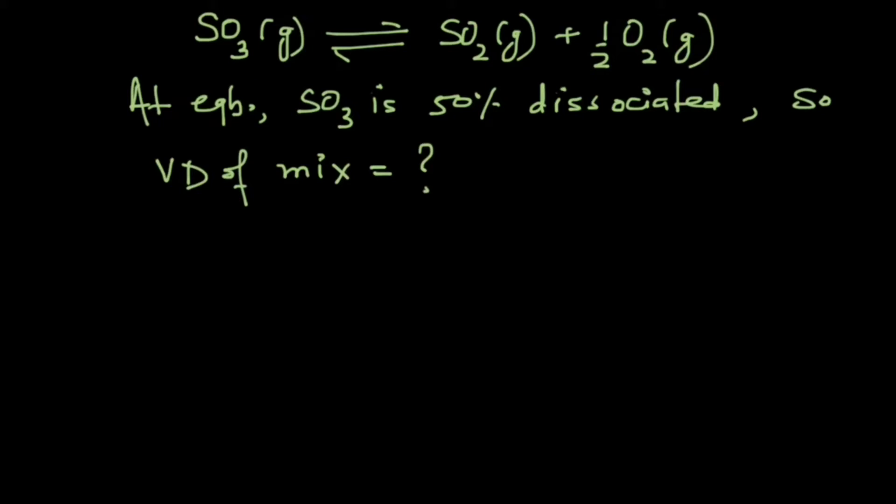The question asks that at equilibrium, SO3 is 50% dissociated, so we will have some SO3 left in the mixture, and the question goes on to ask the vapor density of the mixture.